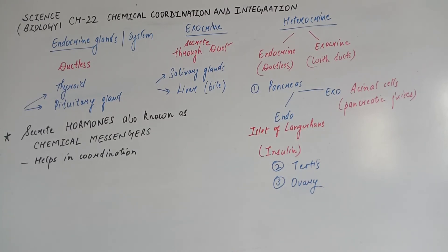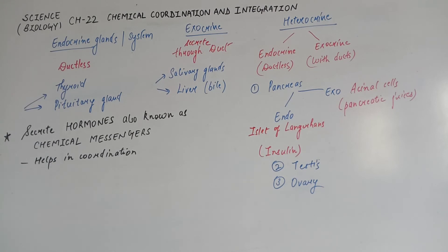Endocrine glands hormones secret करते हैं जिनको हम chemical messengers भी बोलते हैं। Hormones actual में chemicals हैं जो coordination में help करते हैं। हमारी body में अगर कोई reaction होनी हो, तो hormones उसको stimulate भी कर सकते हैं, start भी कर सकते हैं, inhibit भी कर सकते हैं और stop भी।